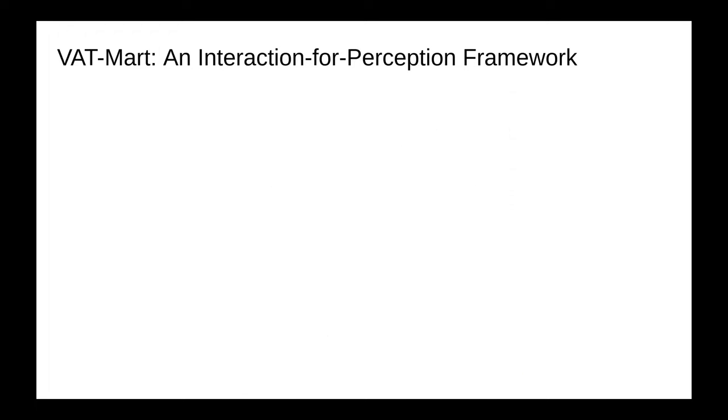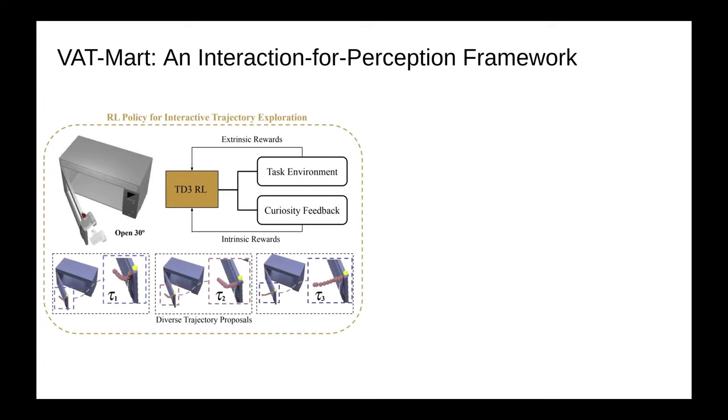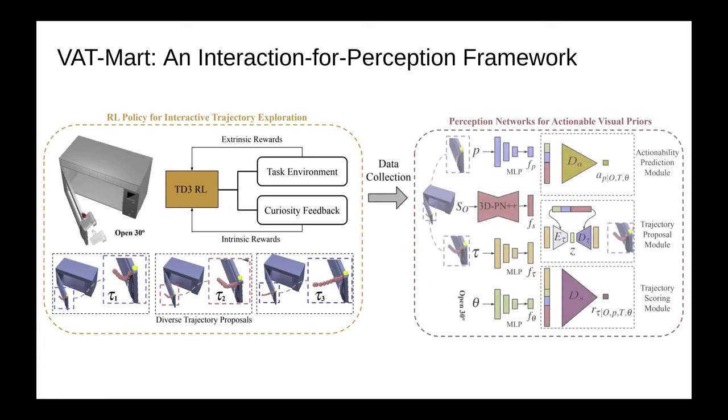We propose an interaction-for-perception framework VAT-Mart to learn such actionable visual priors. We train a reinforcement learning policy to explore diverse interaction trajectories for different shapes and manipulation tasks. The RL policy collects data to supervise the perception networks that learn to summarize and generalize knowledge across different shapes. We also allow the perception networks to provide curiosity feedback that encourages the RL policy to explore diverse and novel interaction trajectories.